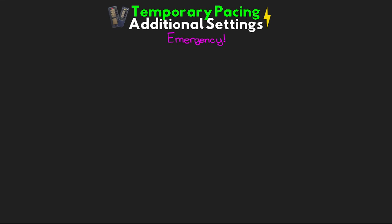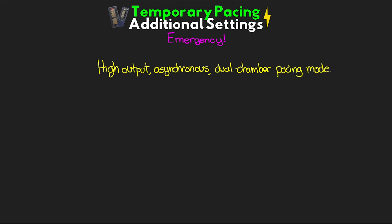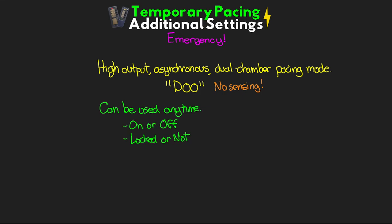Finally, let's talk about emergency pacing. Hitting the emergency button activates a high-output, asynchronous, dual-chamber pacing mode — our DOO mode — where no sensing occurs. This is for when you rapidly need to deliver pacing impulses to your patient. The beauty of this is it can be used any time, whether the device is on or off or the screen is locked or unlocked. When you hit this button, it defaults to 80 pace beats per minute at maximum output — 20 milliamps for the atrium and 25 for the ventricle. To exit emergency DOO mode, press Enter on the Medtronic pacemaker or select a mode from the menu.